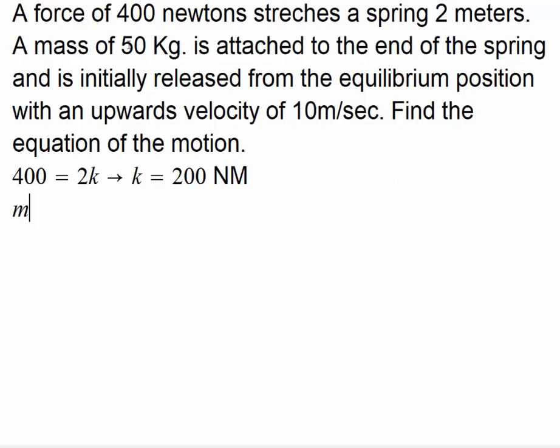Then the equation of motion is going to be m times d²x/dt², where X is the distance from the equilibrium position. This is going to be negative K times X. K is 200, so negative 200x. And the mass is 50 kilograms.